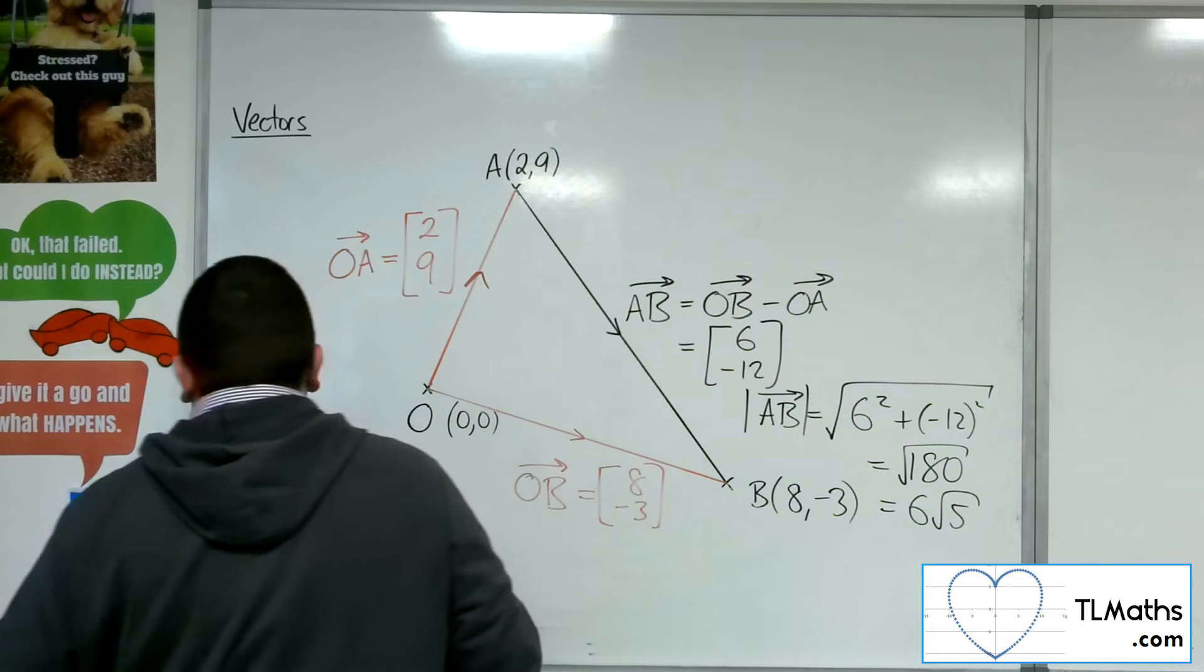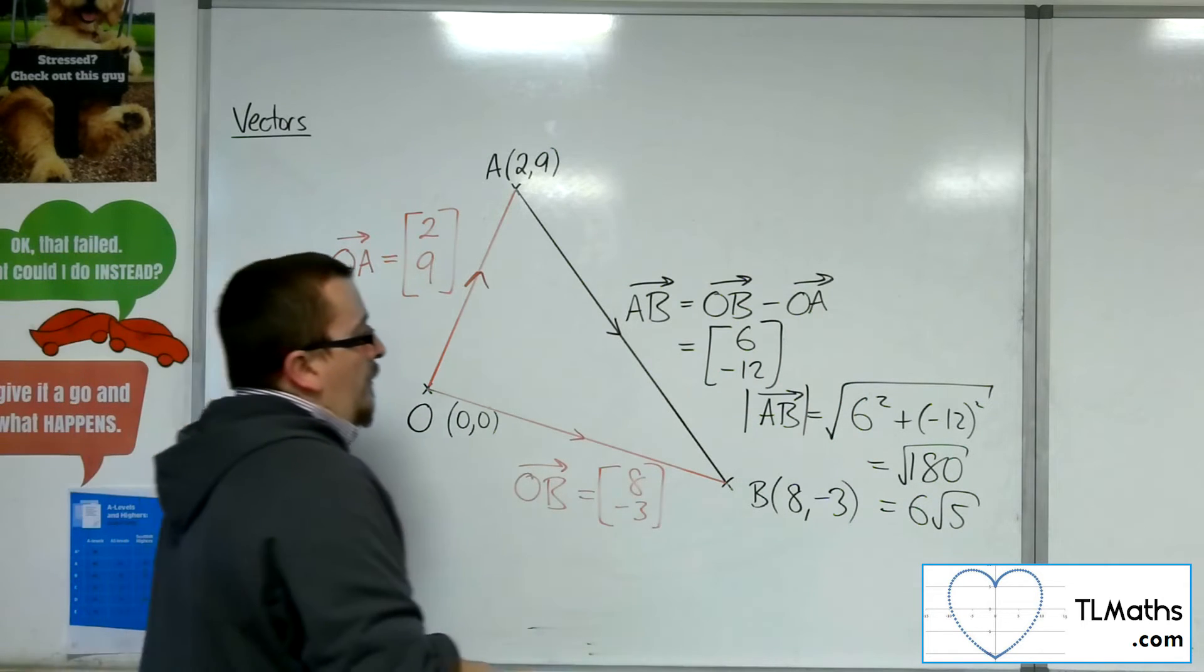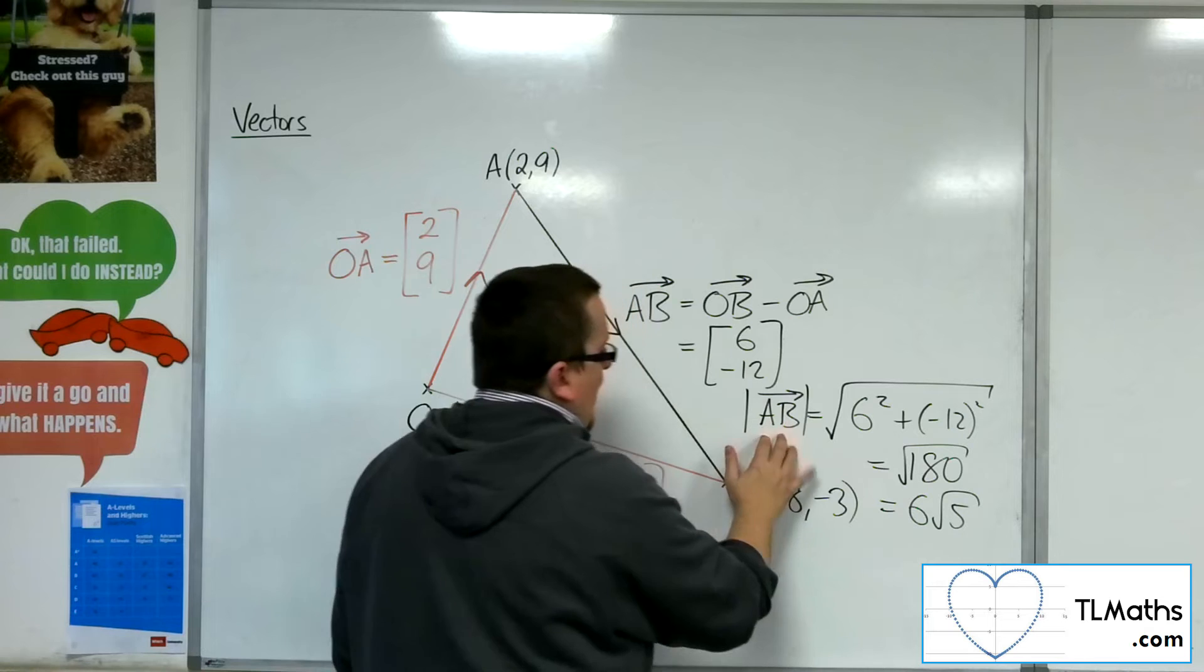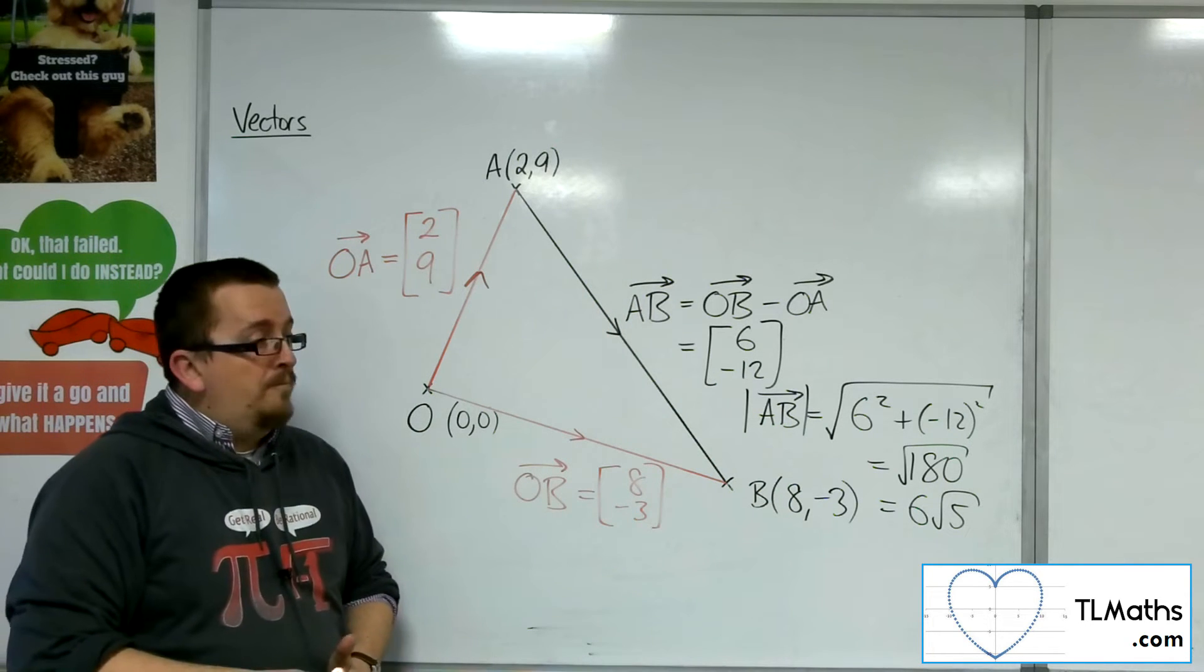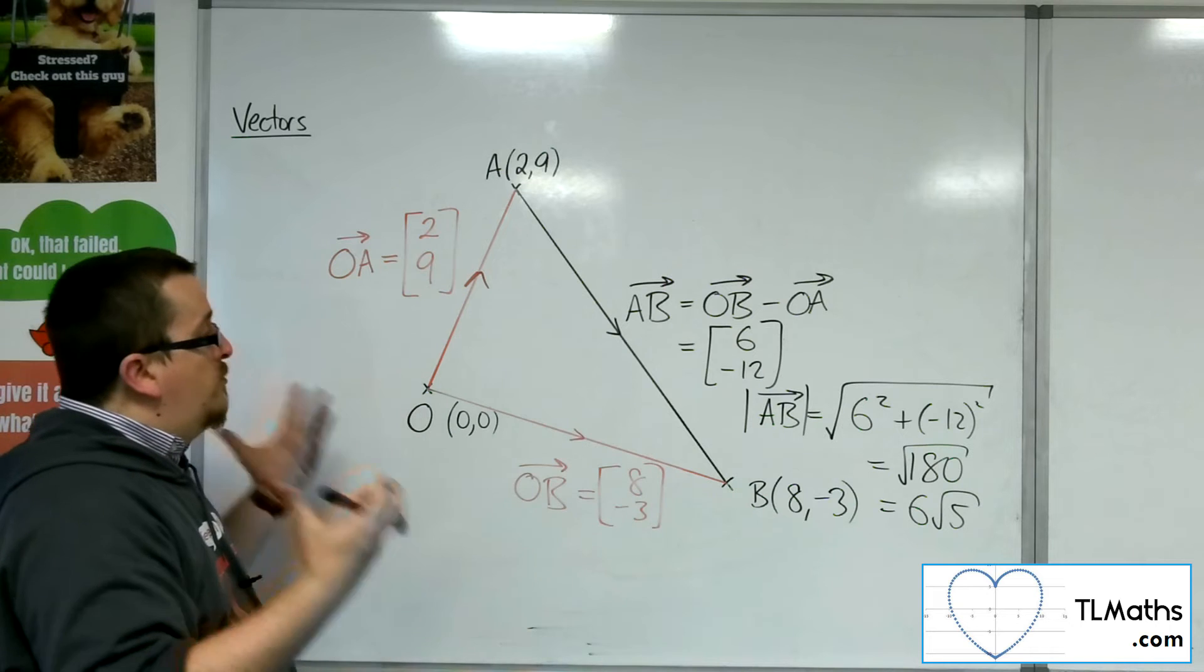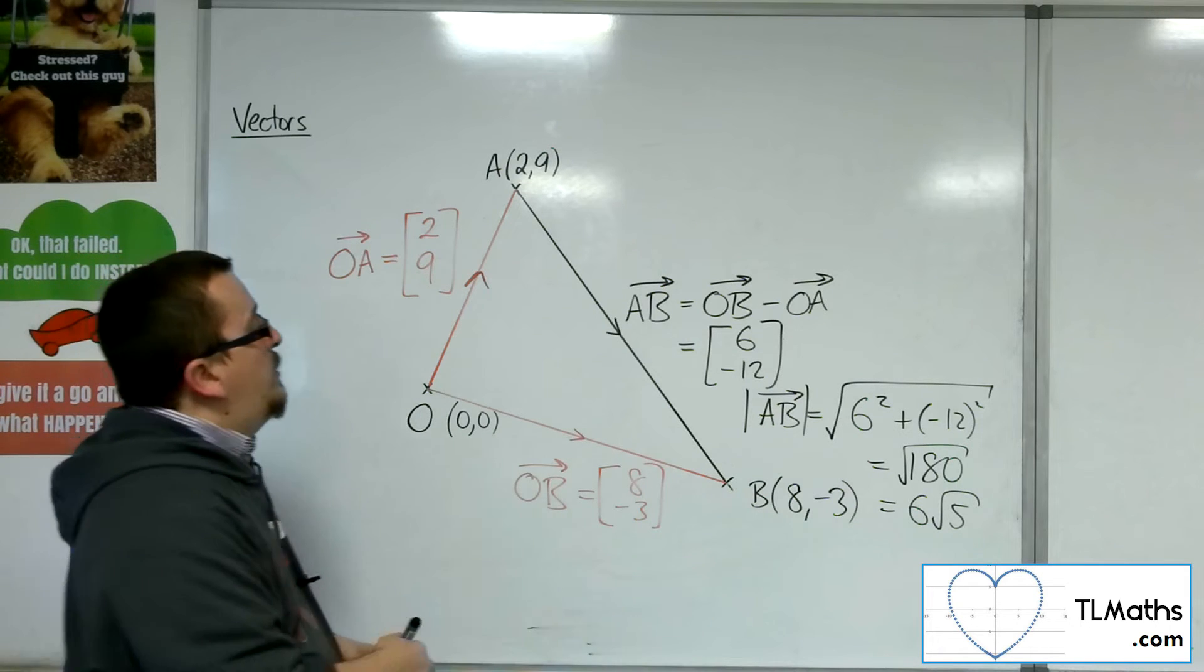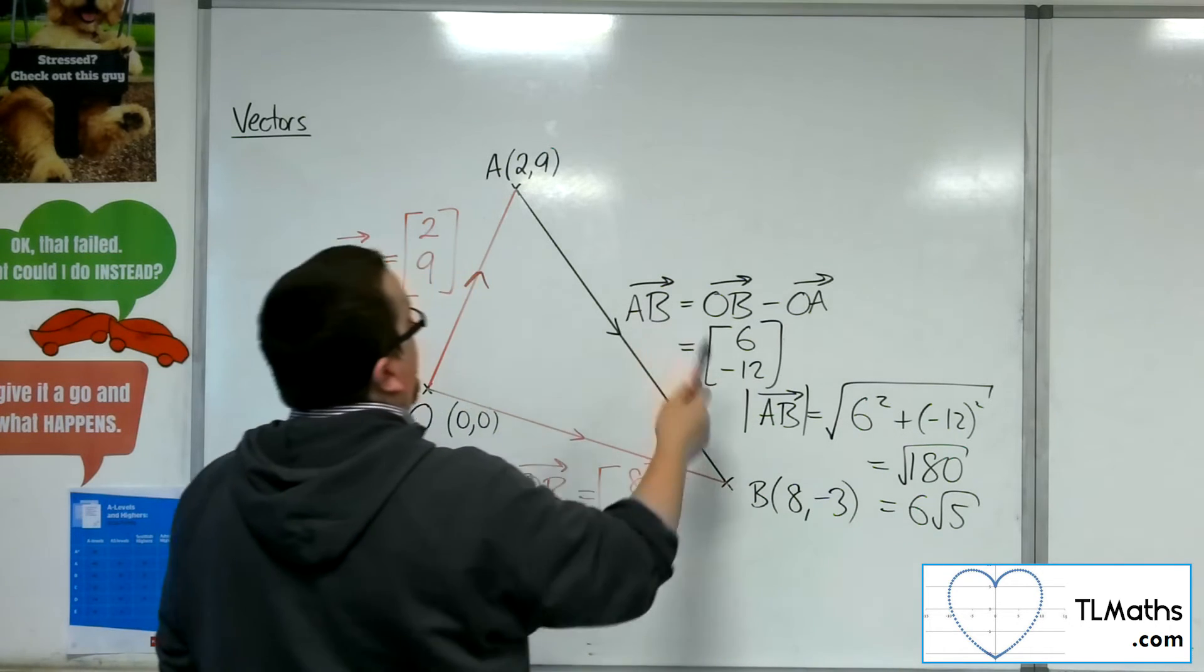So that is the length of the vector AB. And so that is the distance from A to B. And obviously, if this was a problem that you had to deal with, you could always, instead of finding the vector AB, have turned this into a right-angled triangle.